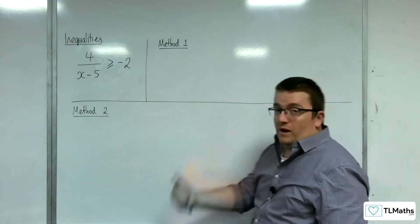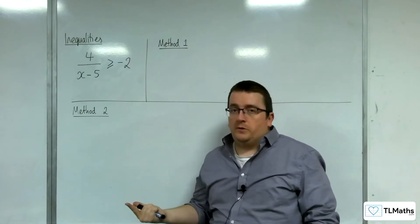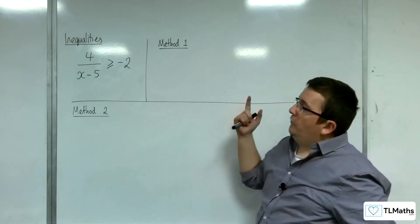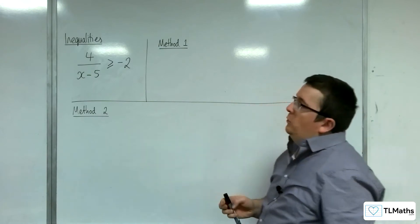Method one is going to be doing it graphically. Method two is just going to be doing it wholly algebraically. So we've got 4 over x minus 5 is going to equal to minus 2.